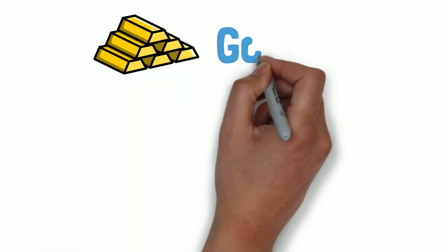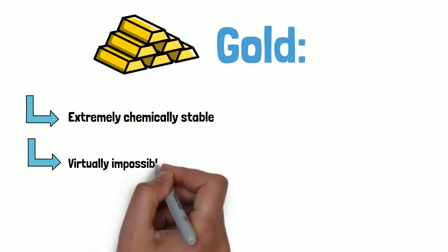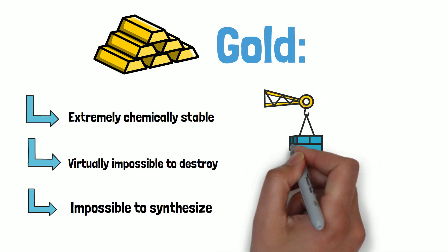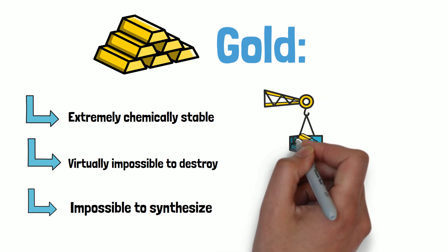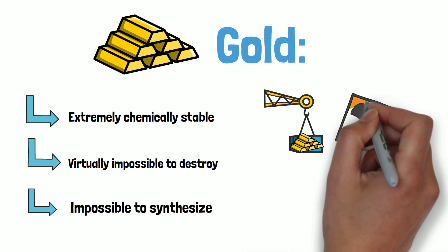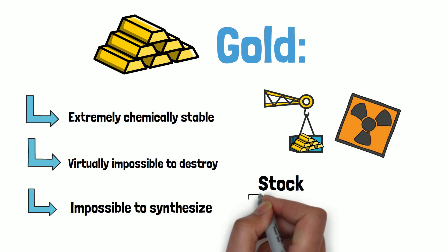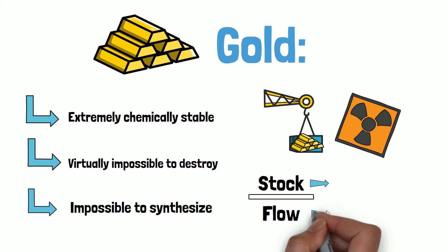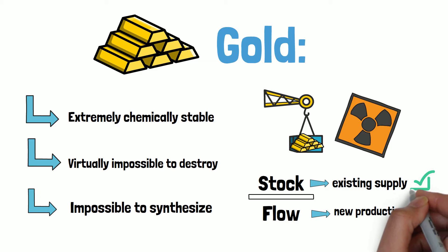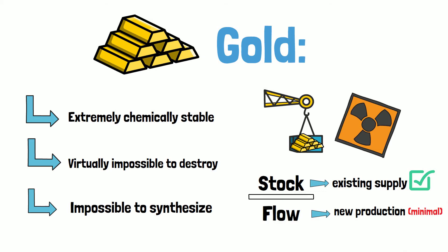Gold is extremely chemically stable and virtually impossible to destroy. Gold is impossible to synthesize from other materials and is extremely rare on our planet. The only way to increase the supply of gold is to mine more from the earth. Gold mining is an expensive, toxic, and extremely uncertain process that humans have been engaged in for thousands of years with ever-diminishing returns. The existing stockpile of gold is the product of thousands of years of production, and the existing supply far outnumbers the magnitude of new production. To this day, it is impossible for gold miners to mine quantities large enough to depress the price significantly.